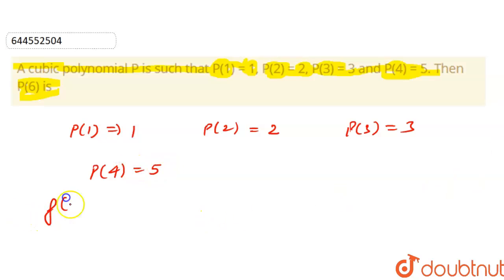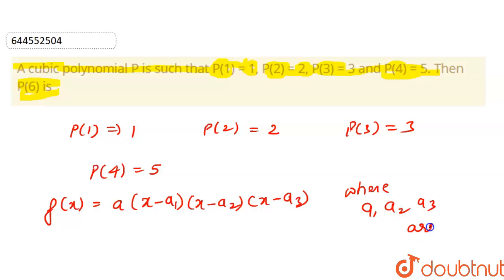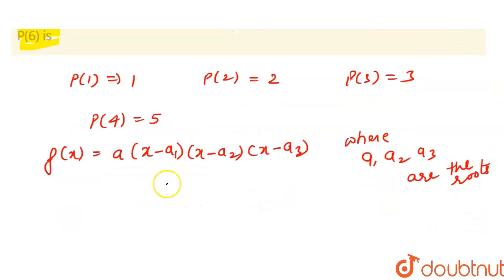We know that for a cubic polynomial, we have a general equation of it as a·(x - a1)·(x - a2)·(x - a3), where a1, a2, a3 are the roots of the polynomial.